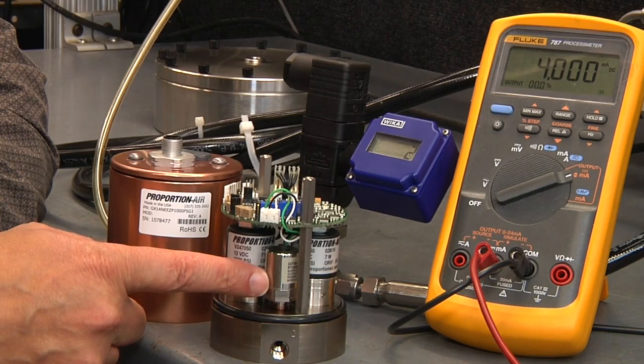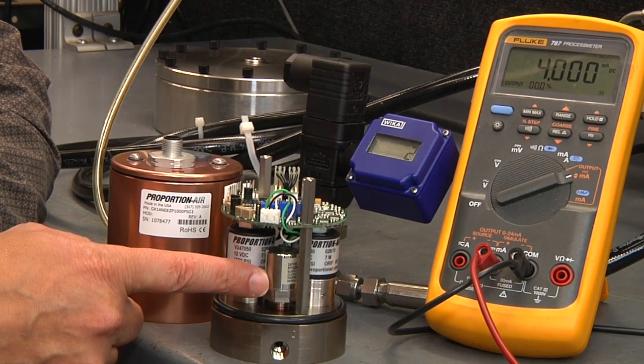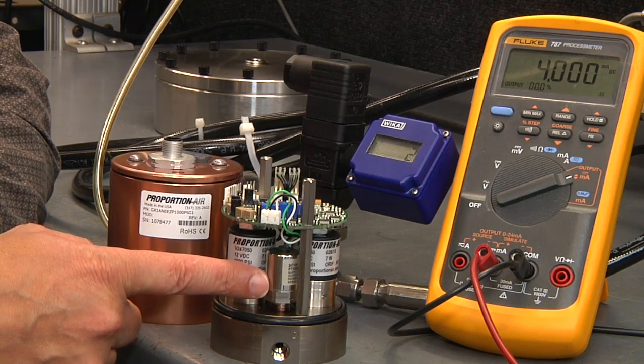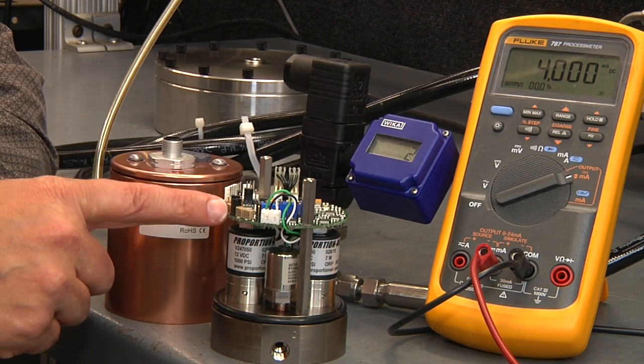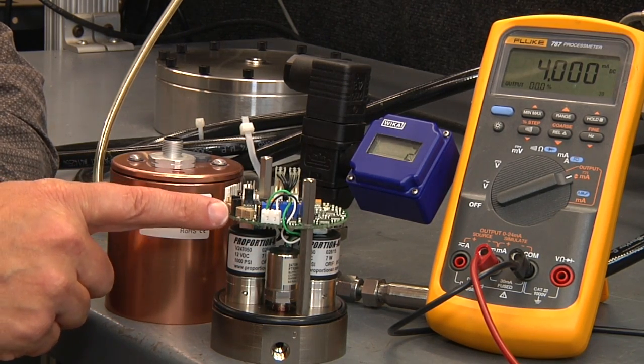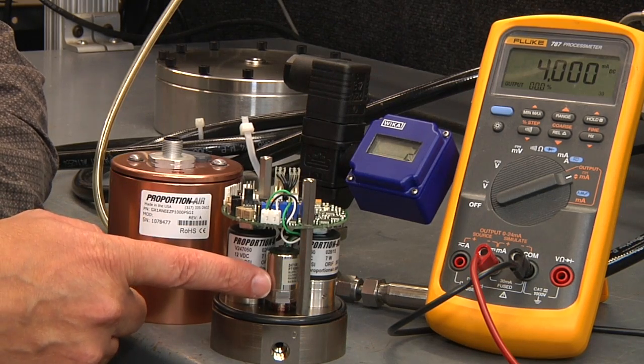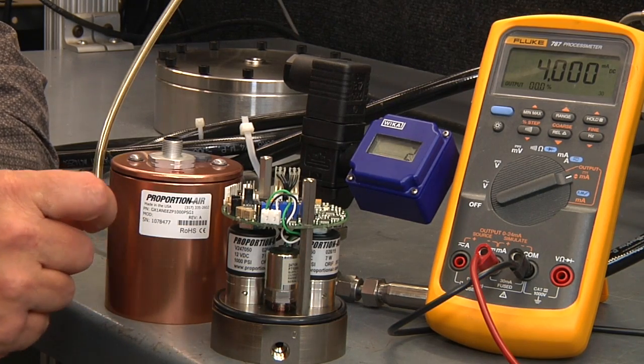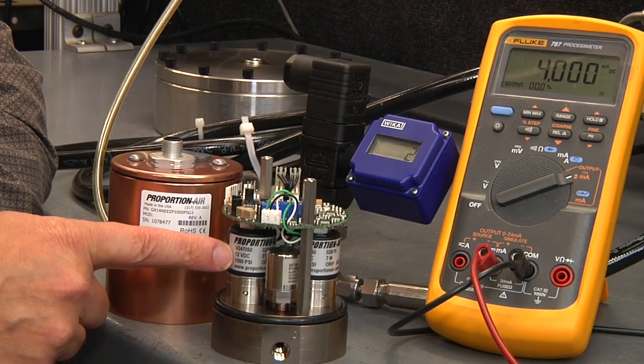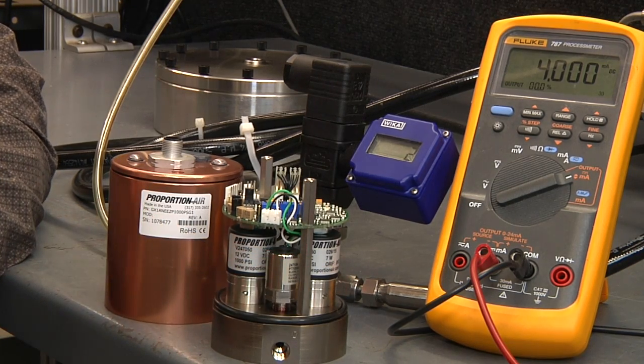This stainless steel pressure transmitter is mounted between the two valves and it measures the system pressure and provides feedback to the circuit board. The circuit compares the pressure to your desired set point and modulates one of the two valves accordingly to set the pressure equal to your command.